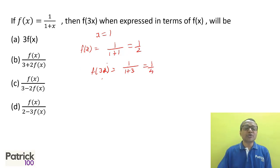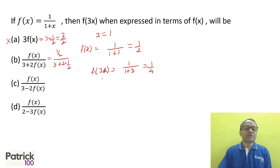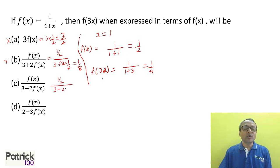The first option gives 3 × (1/2) = 3/2 — not the answer. The second option gives f(x)/(3 + 2·f(x)) = (1/2)/(3 + 1) = 1/8 — not the answer, we need 1/4. Option C gives f(x)/(3 − 2·f(x)) = (1/2)/(3 − 1) = (1/2)/2 = 1/4 — looks correct.